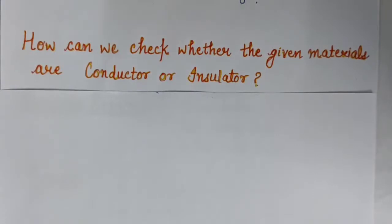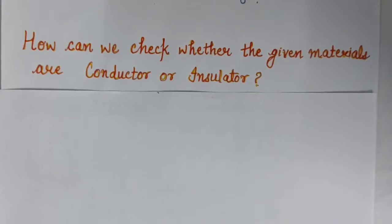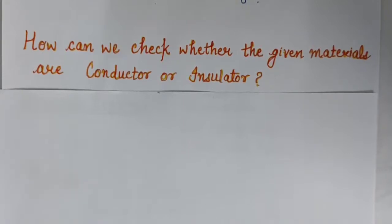Now the question is: how can we check whether a given material is a conductor or insulator? In class 6, we made a tester to test whether a particular material allows electric current to pass through it or not. We will recall how the tester helped us decide. We found that materials such as copper and aluminium conduct electricity, whereas materials such as rubber, plastic, and wood do not conduct electricity.